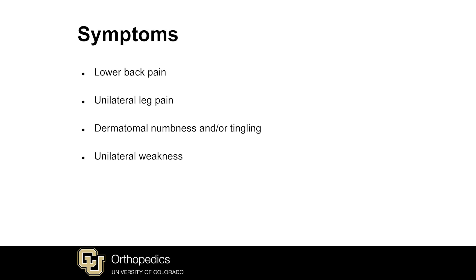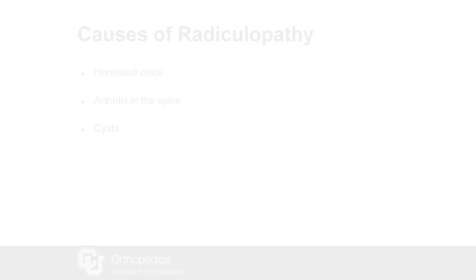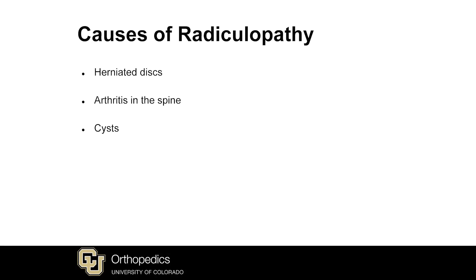Lumbar radiculopathy is the term used to depict a condition where one or more of the nerves in the low back is compressed or pinched, causing pain most commonly into one of the legs. The spinal cord ends in the upper portion of the lumbar spine, which makes up the lower back. From there, a number of nerves travel to the legs in the central canal and then exit at various levels through canals or channels we call foramen. Anything that takes up space either in that central canal or in the foramen has the potential to encroach on one or more of these nerves.